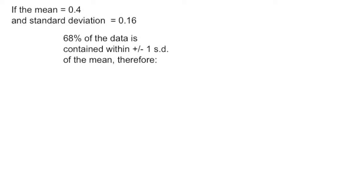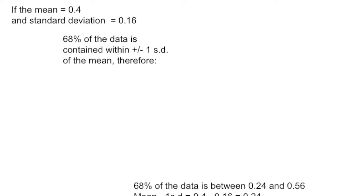If you're looking for the range that contains 68% of the data, then you're going to add or subtract one standard deviation from the mean. Therefore, in this example where the mean is 0.4, if we add or subtract the standard deviation provided, 0.16, we end up with the range that contains 68% of the data.